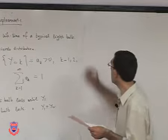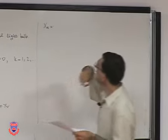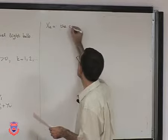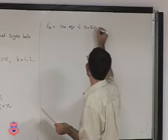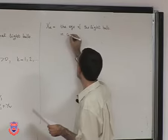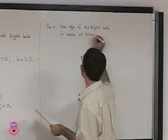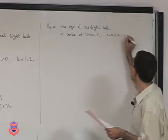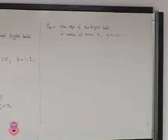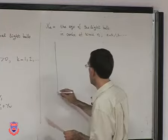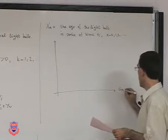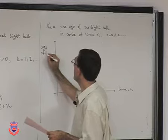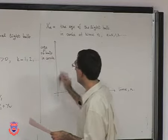We define X_n as the age of the light bulb that is in service at time n, for n ranging from 0 to large numbers. You can then look at the sample path of this process — time n on the horizontal axis, and the age of the bulb in service on the vertical axis.